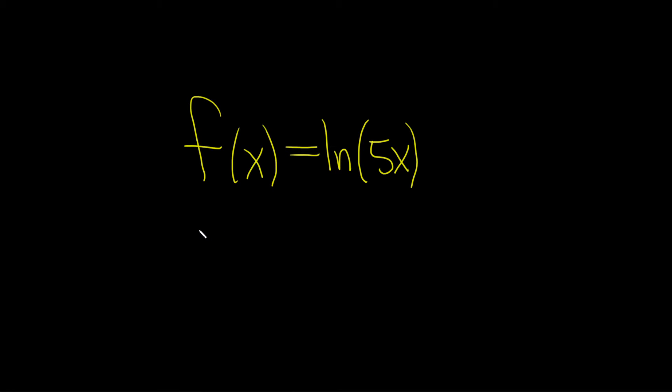In this problem, we're being asked to find the derivative of the natural log of 5x. So there's two ways to do it. We can break it up using properties of logs, or we can use the chain rule.